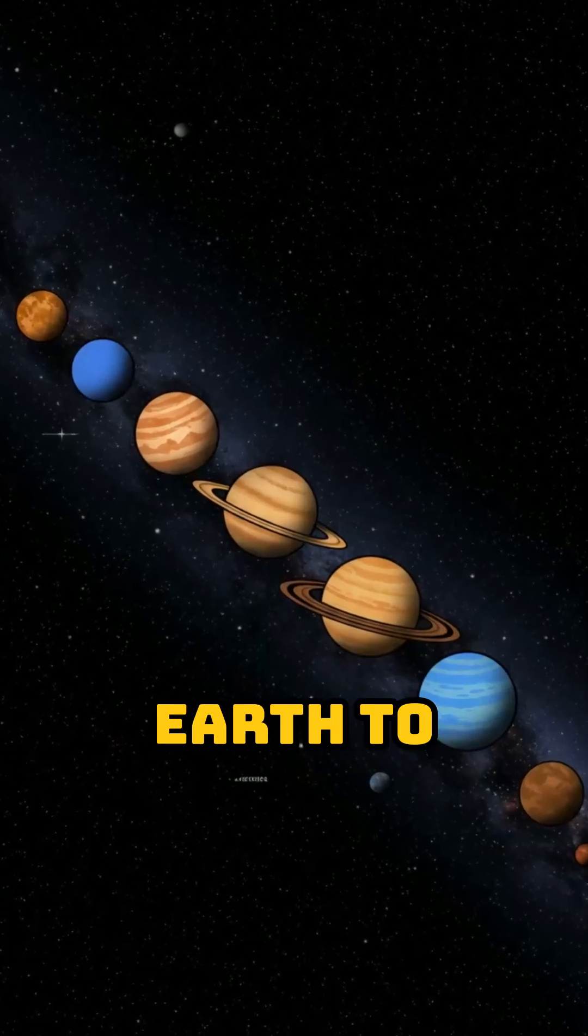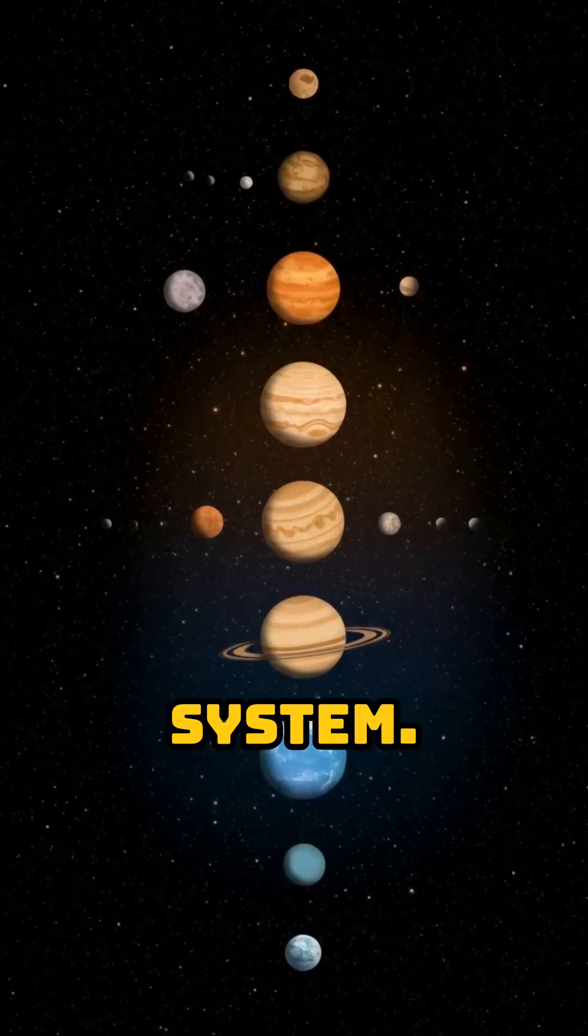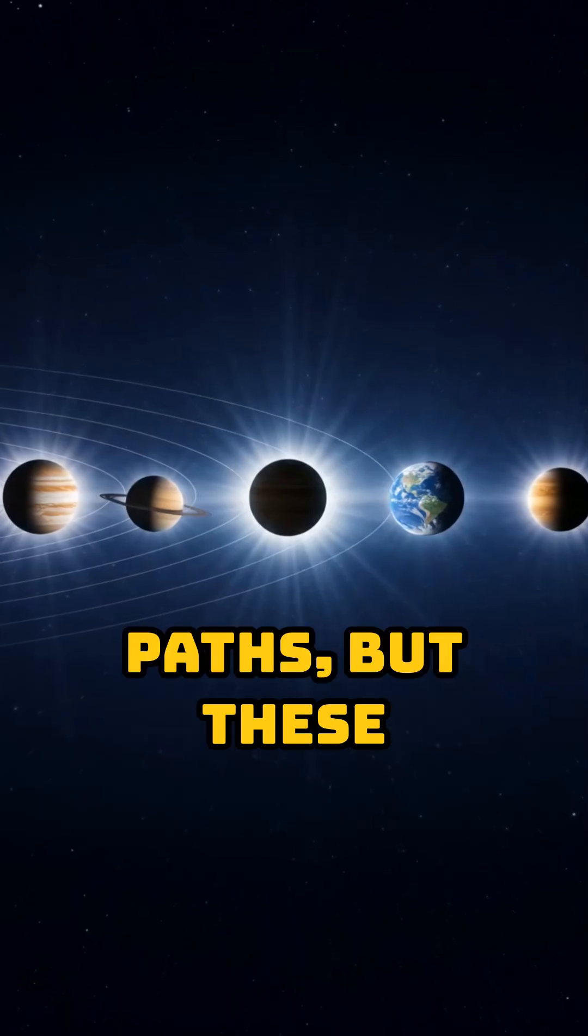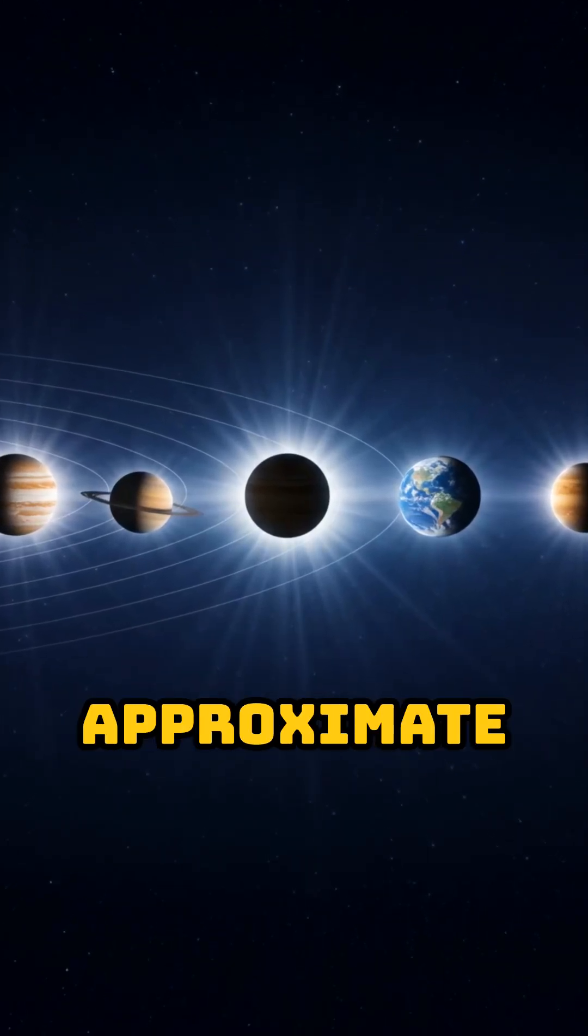Here's the average distance from Earth to each of the eight planets in the solar system. These distances vary because all planets orbit the Sun in elliptical paths, but these are the approximate averages.